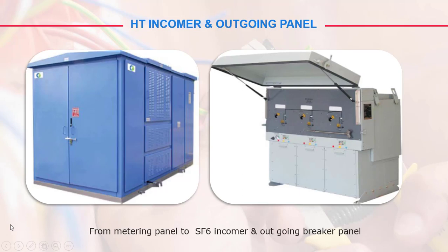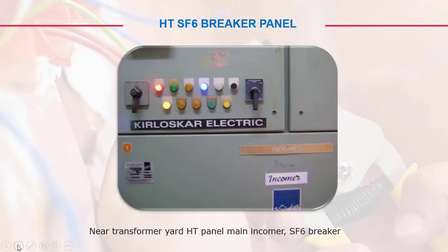From the HT incoming and outgoing panel, the power flows from the metering panel to the SF6 incomer and outgoing breaker panel. We will cover the SF6 in complete detail in the next class. For now, we are just going through the flow from HT to LT. This SF6 panel is located near the transformer yard.